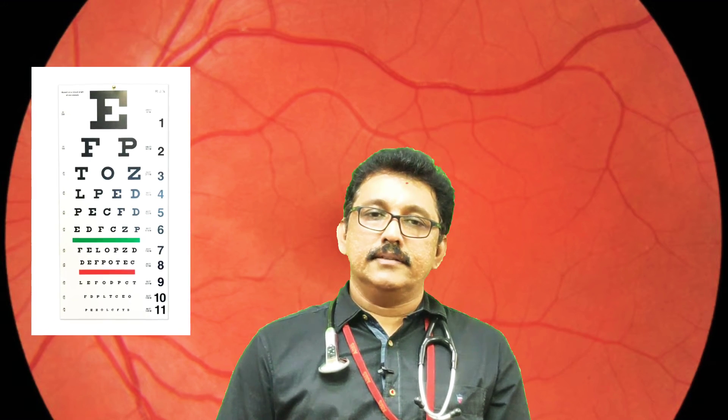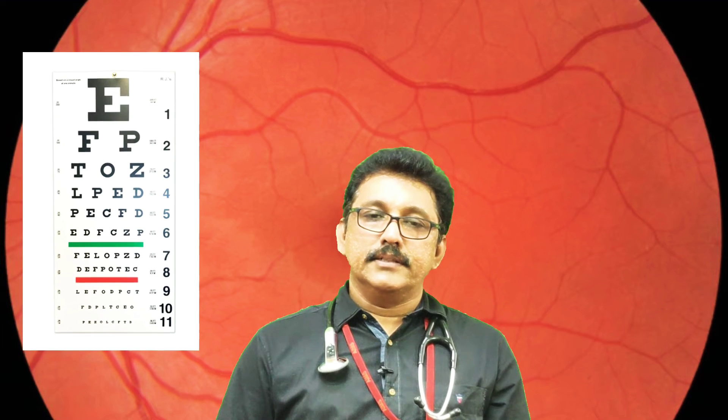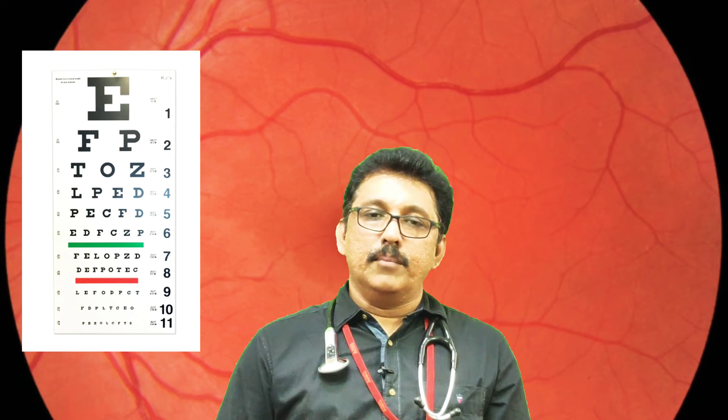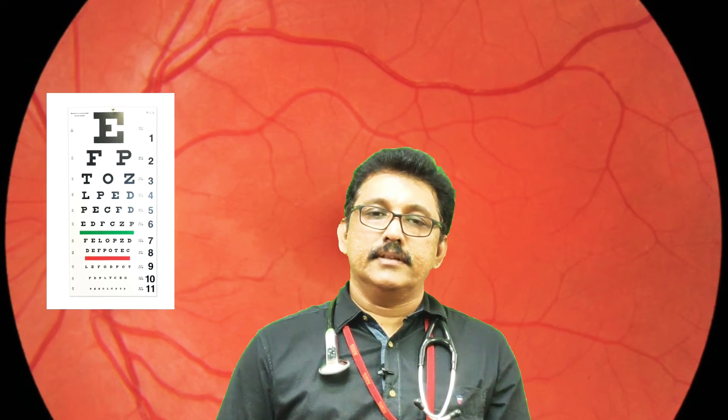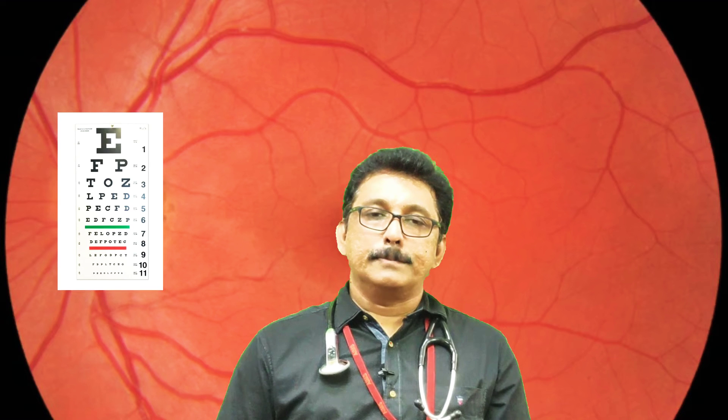The Snellen chart has six lines and even color bars, so you can also test color vision with the same chart.